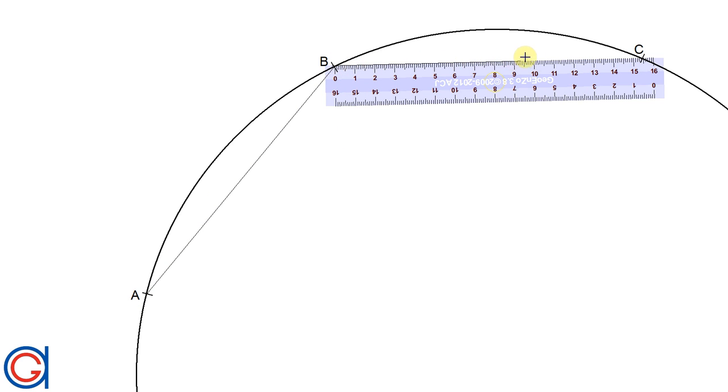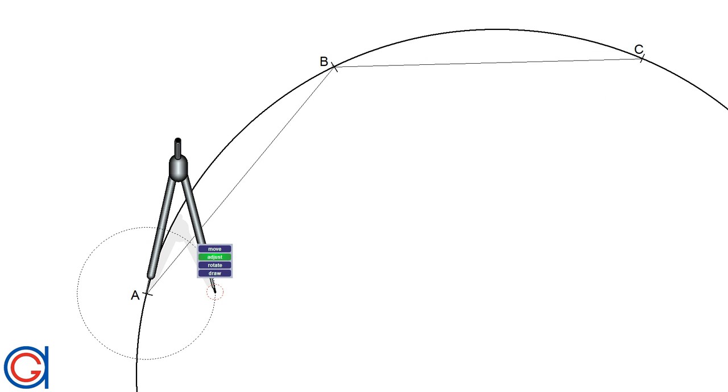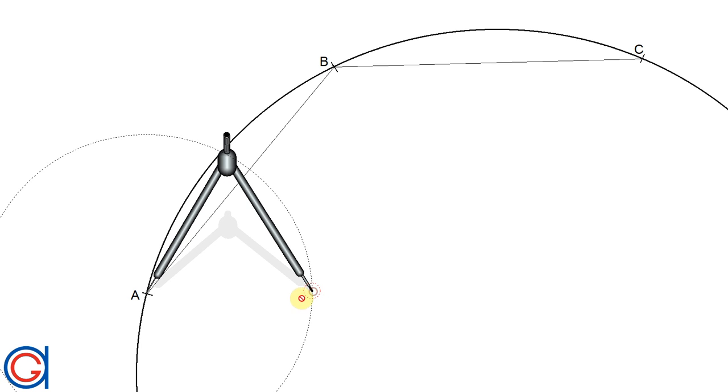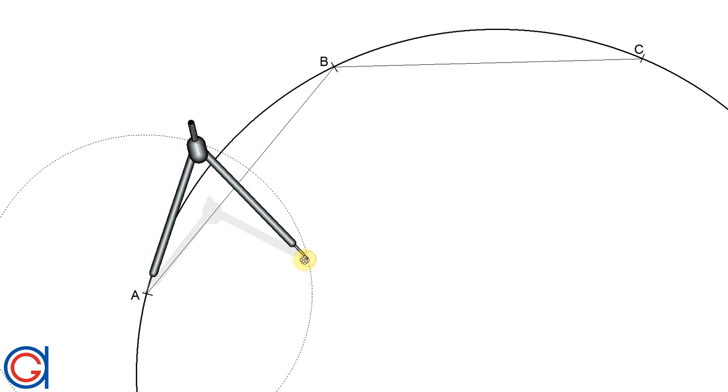The next step is to work out the perpendicular bisector of each of these line segments. So we'll start with AB, setting our compass slightly longer than half the length of the line segment AB.